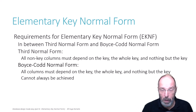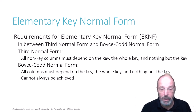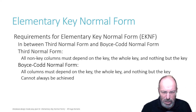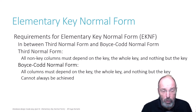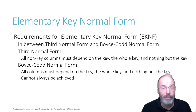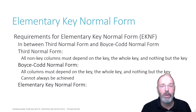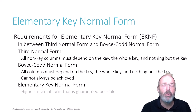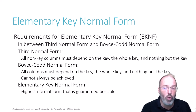Boyce-Codd normal form does away with that restriction. All columns must depend on the key, the whole key, and nothing but the key. But as we saw in the previous video, Boyce-Codd normal form is not always possible to achieve. And that is where elementary key normal form comes in — it is always possible; this is guaranteed.